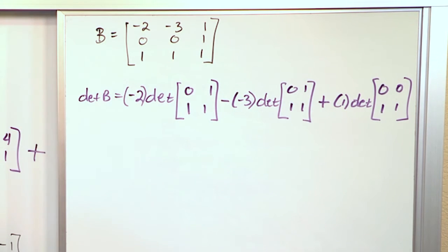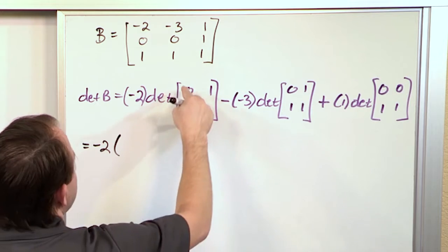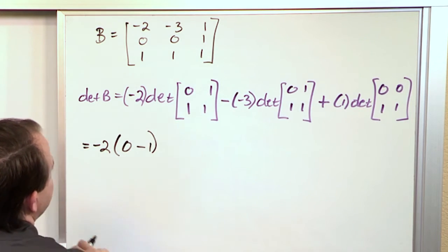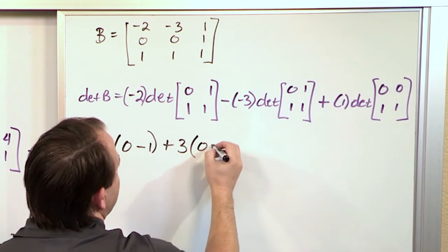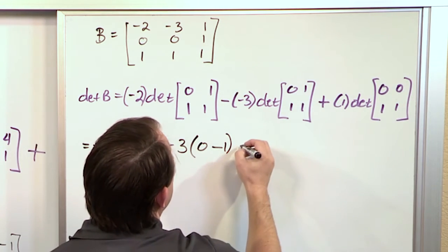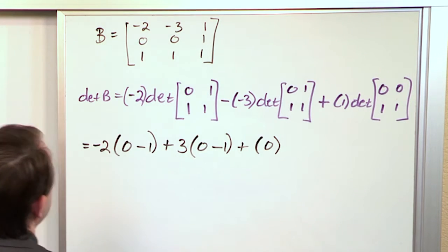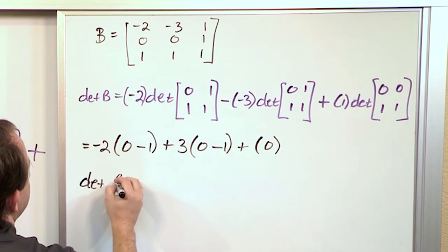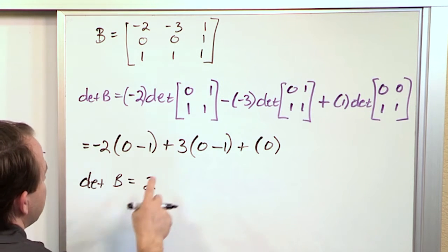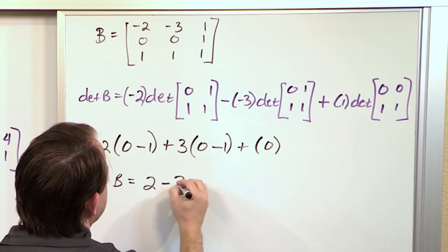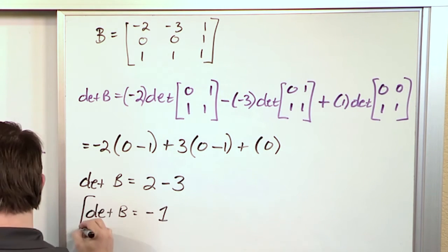These submatrices are very simple. For the first: 0×1 − 1×1 = negative 1, so we have negative 2 times negative 1. The minus sign in front of the negative 3 makes it a plus 3. For the second submatrix: 0×1 − 1×1 = negative 1, so we have 3 times negative 1. The last submatrix gives 0×1 − 0×1 = 0. So the determinant of B equals: negative 2 times negative 1, which is 2, plus 3 times negative 1, which is negative 3, plus 0. That gives us 2 minus 3, so the determinant of B is negative 1.